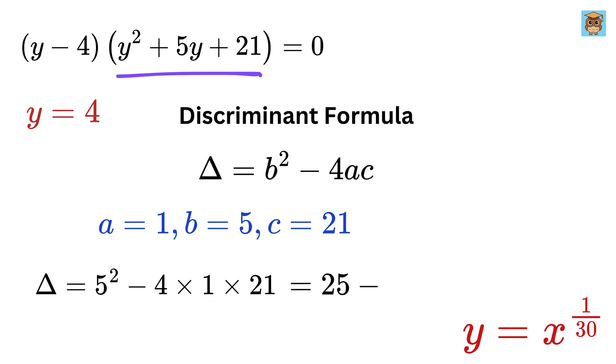First we calculate 5 squared, which is 25. Then we compute 4 times 1 times 21, which is 84. Now we subtract 25 minus 84, which gives us minus 59. Since the discriminant is negative, this quadratic equation has no real solutions.